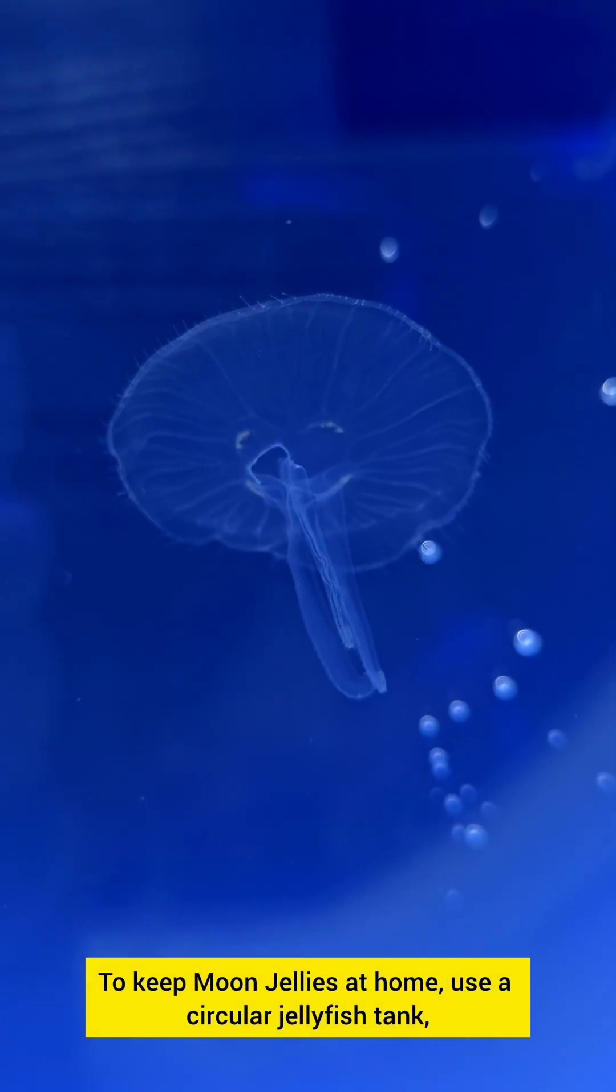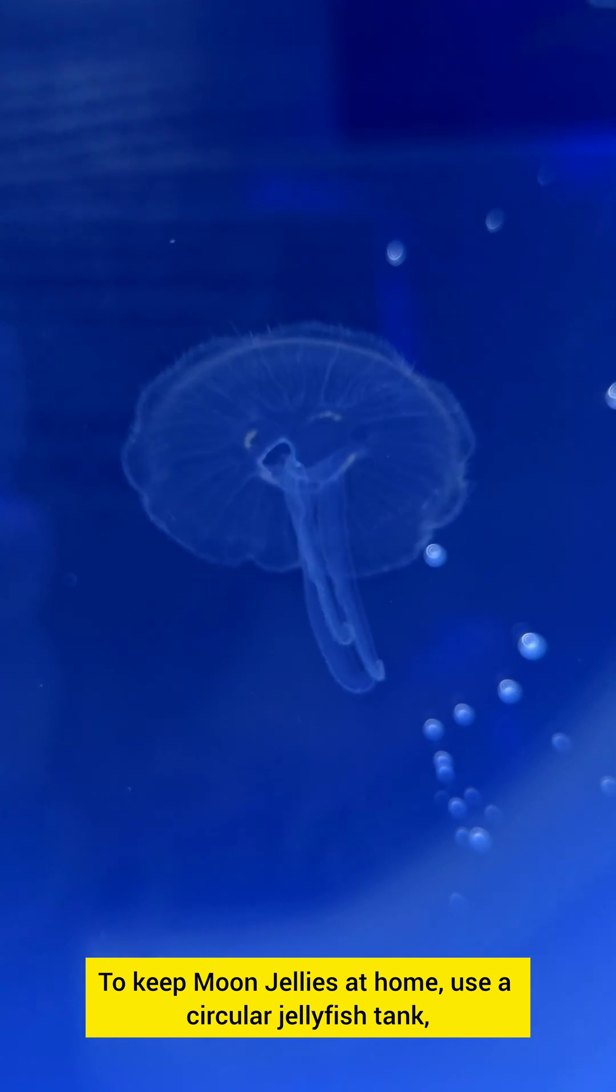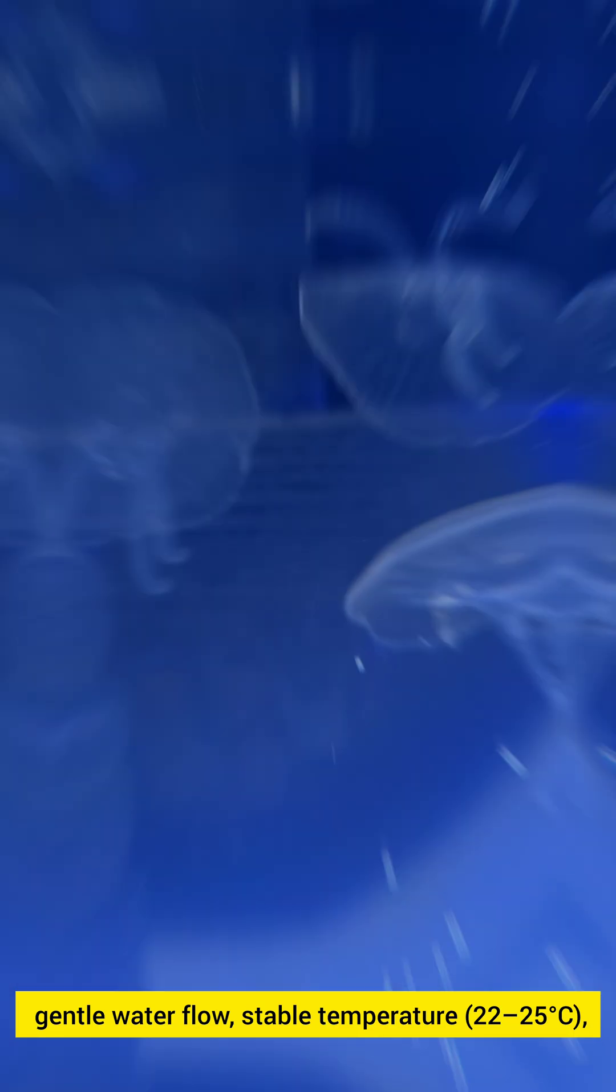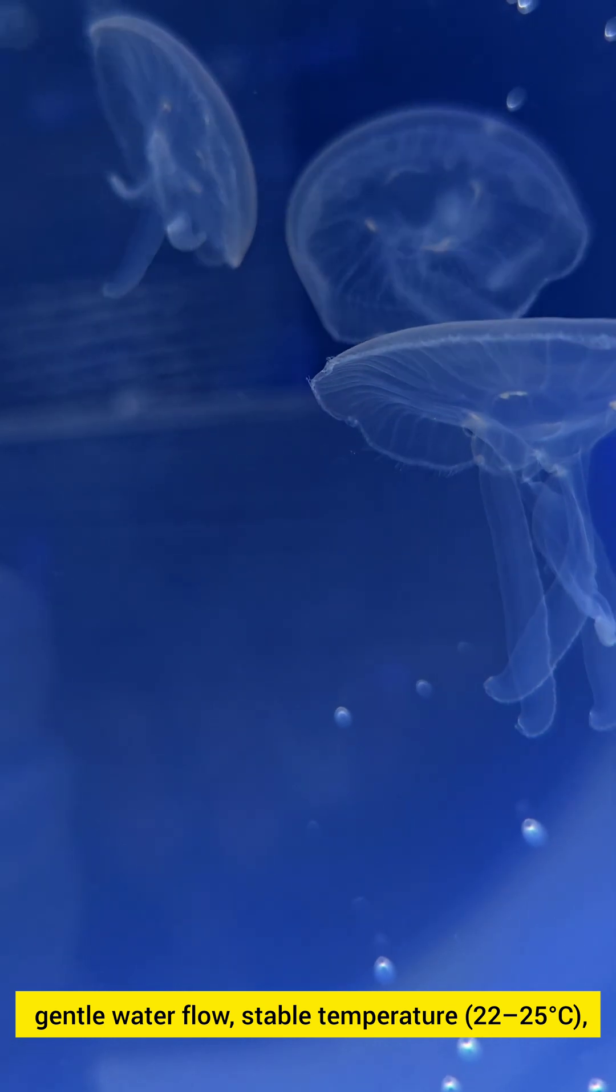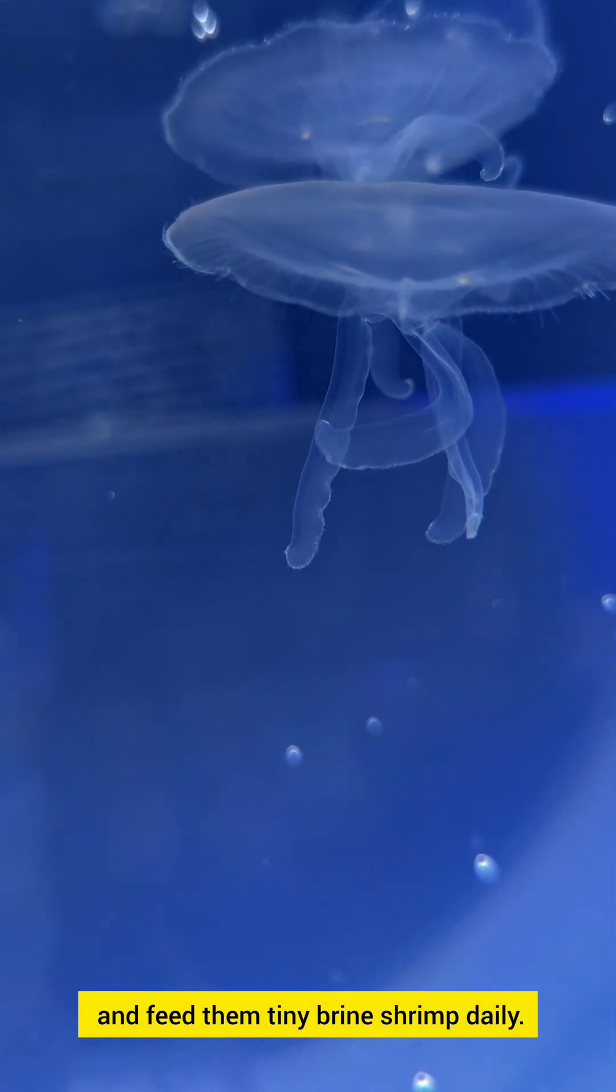To keep moon jellies at home, use a circular jellyfish tank, gentle water flow, stable temperature, 22 to 25 degrees Celsius, and feed them tiny brine shrimp daily.